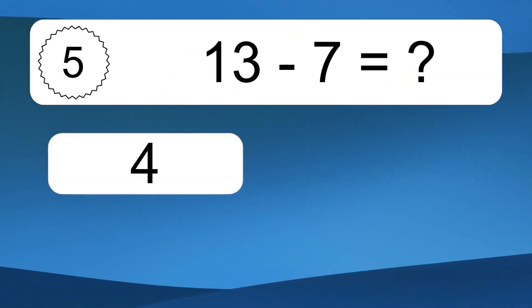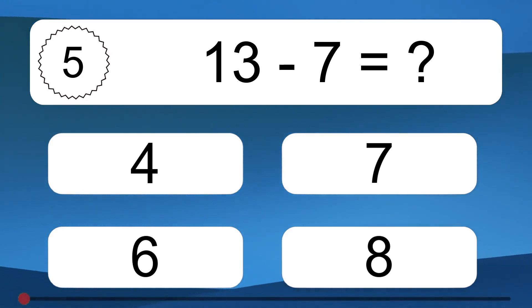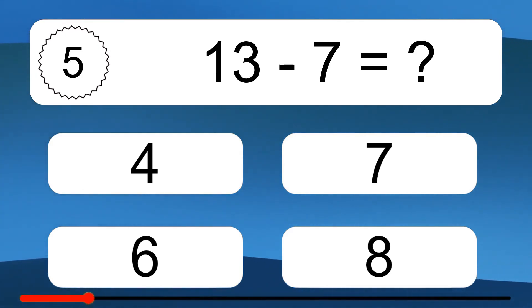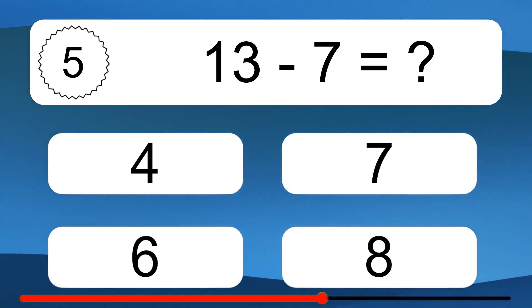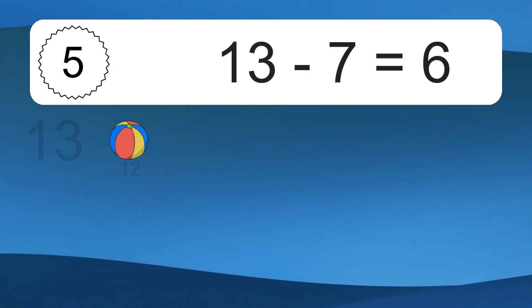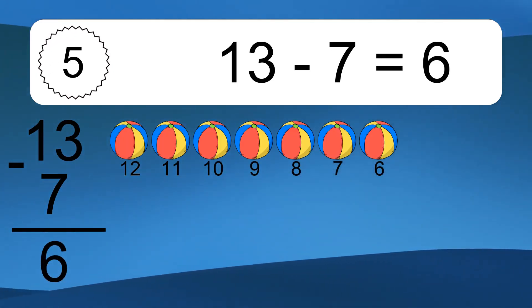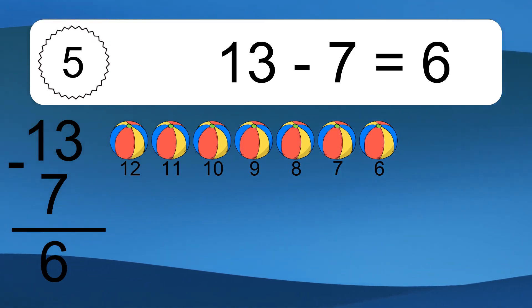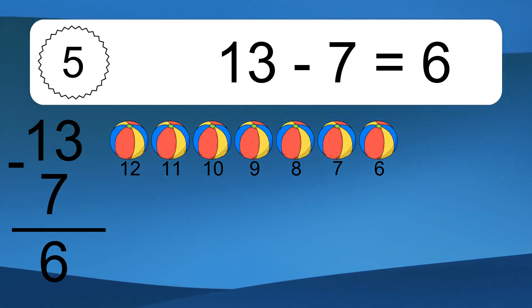13 minus 7 equals what? 13 minus 7 equals 6. Let's count it. 12, 11, 10, 9, 8, 7, 6.